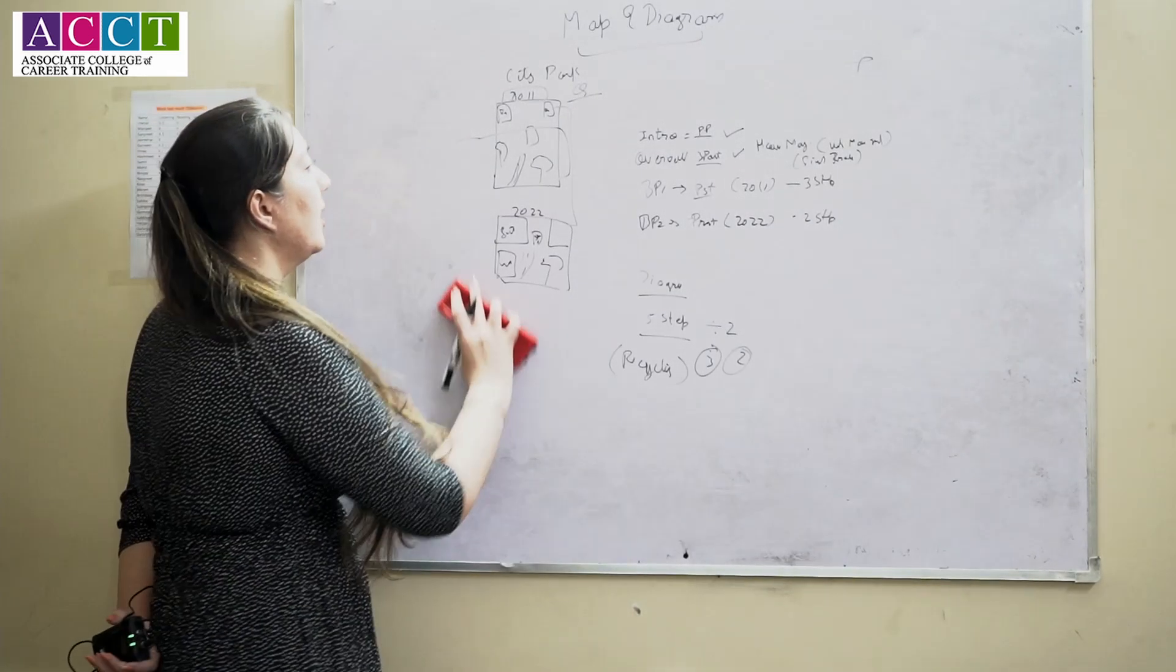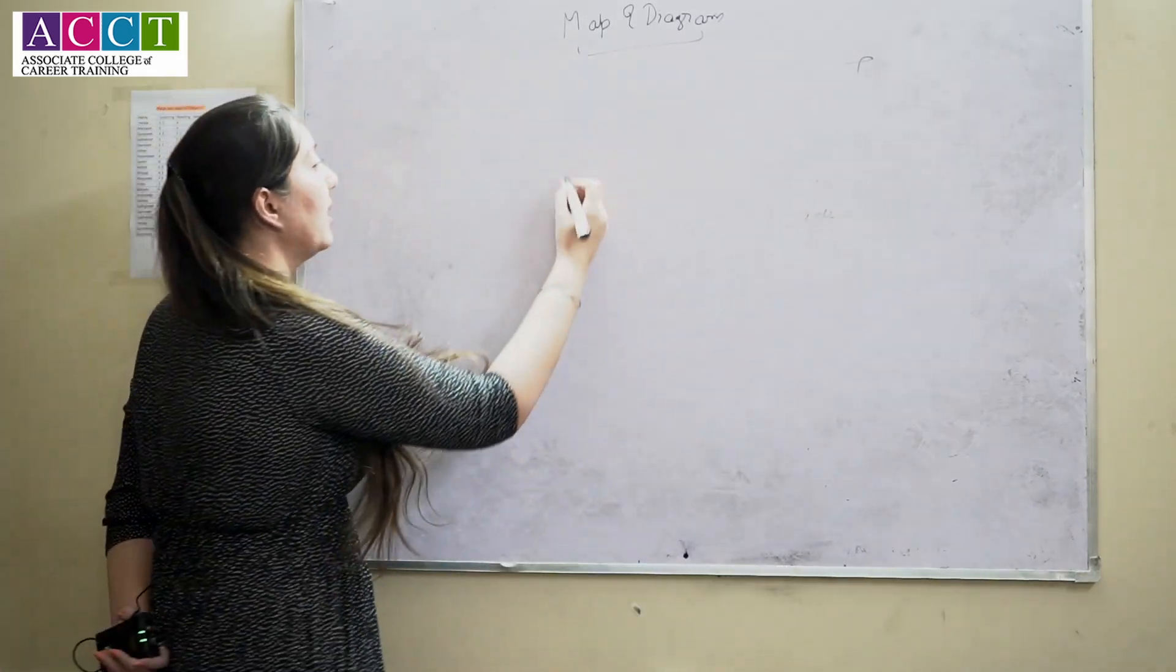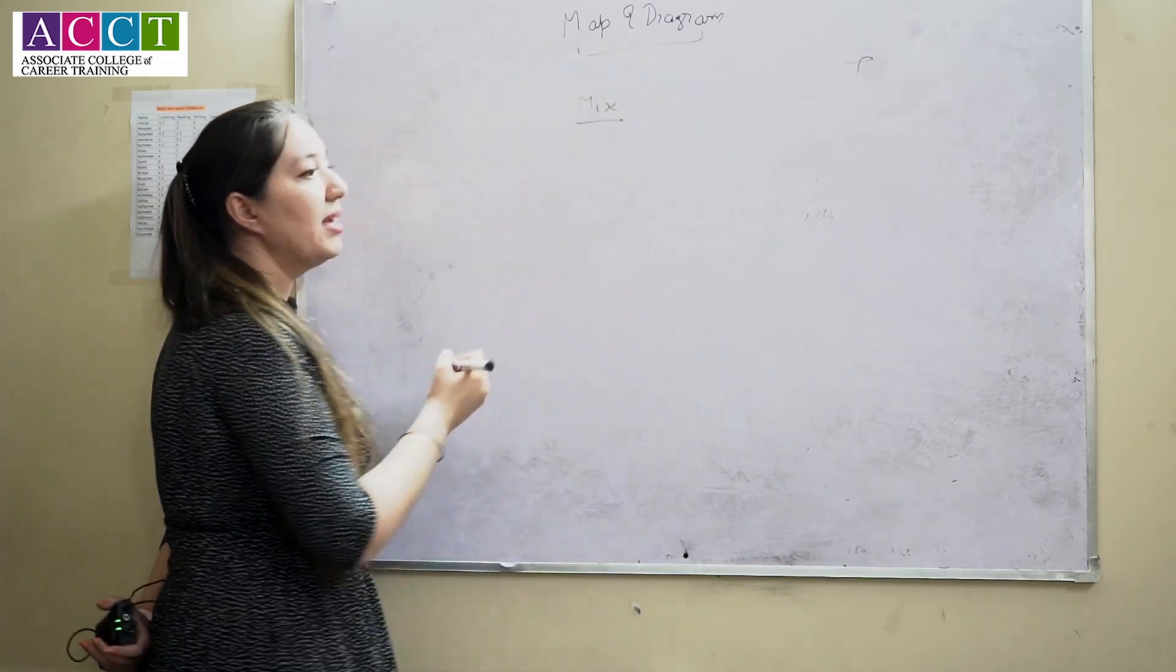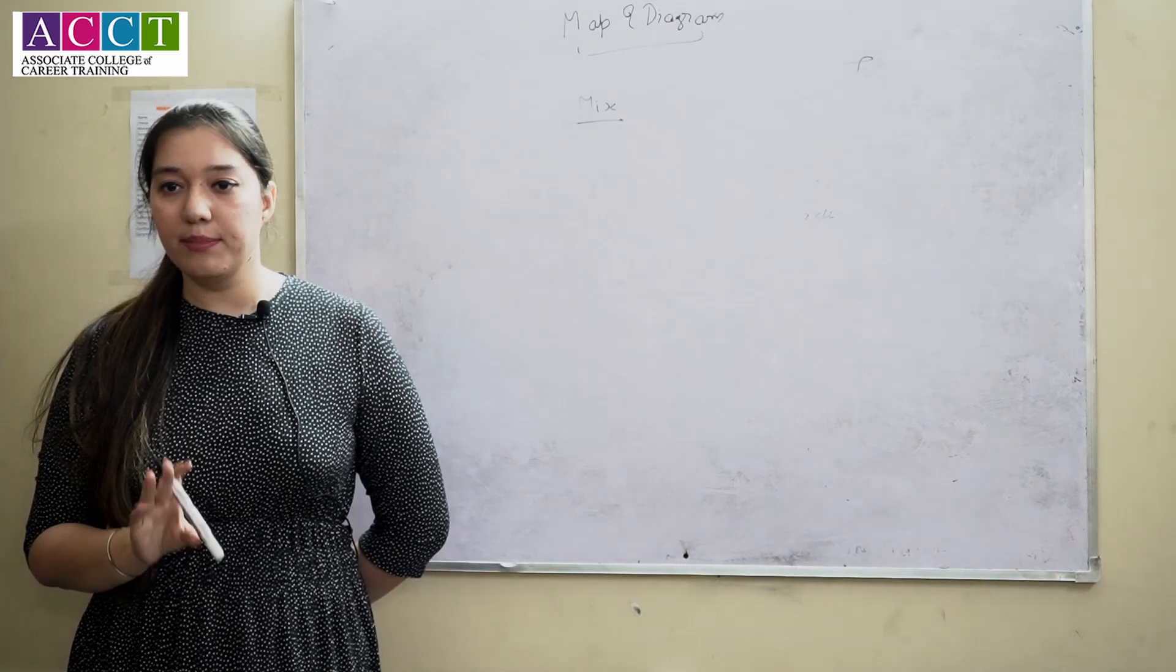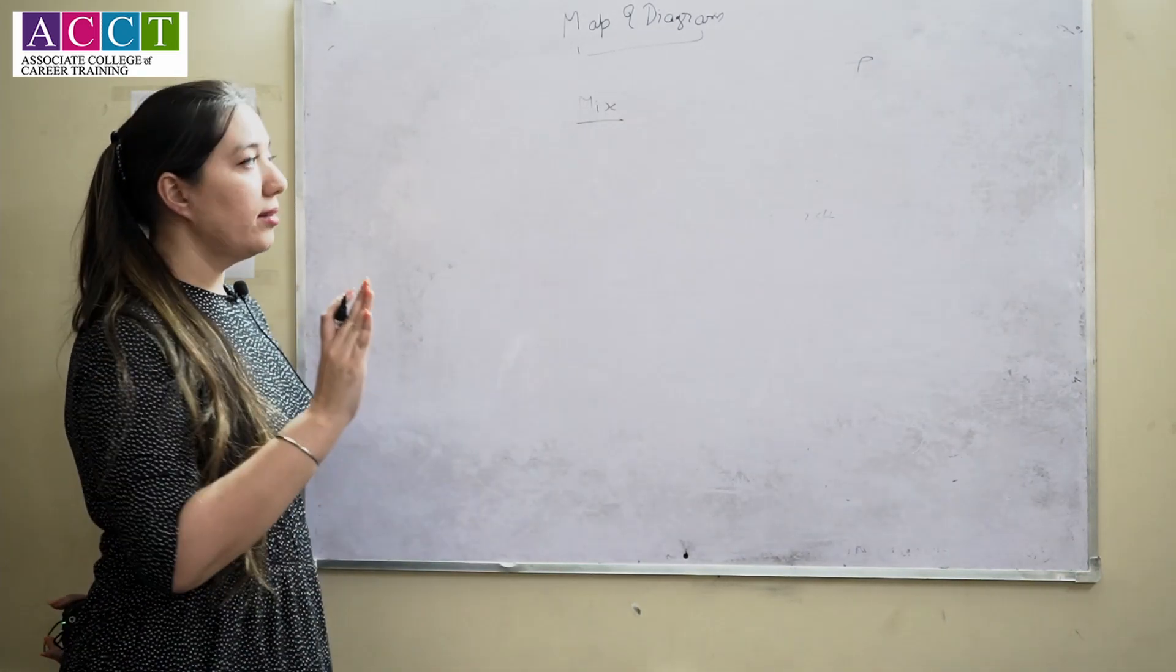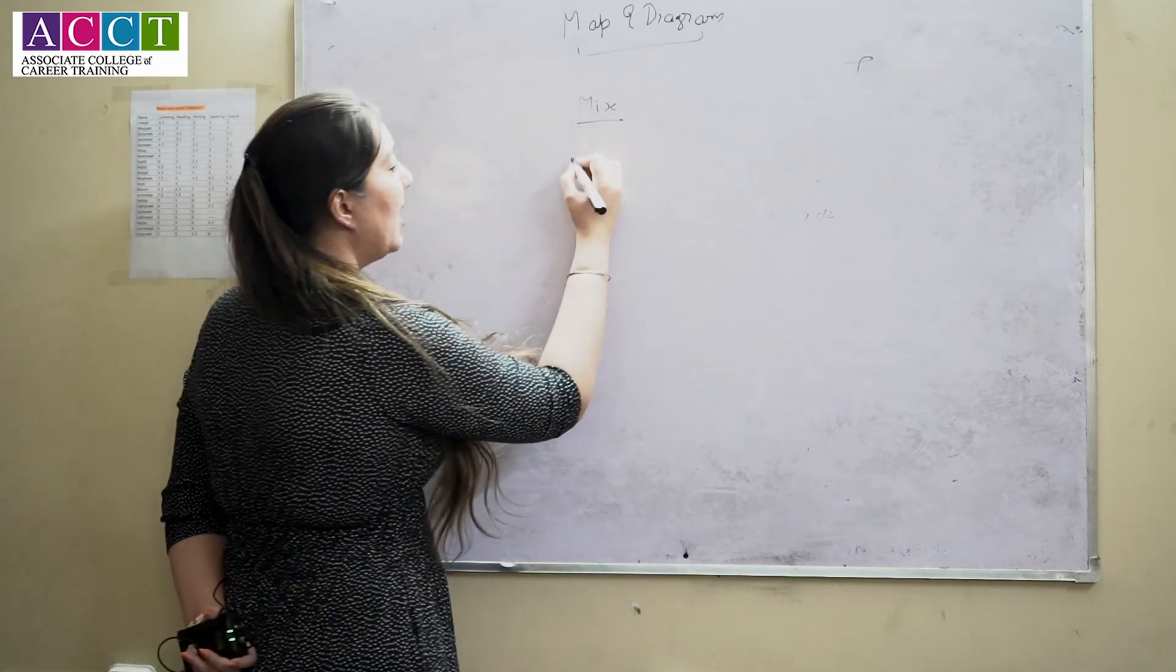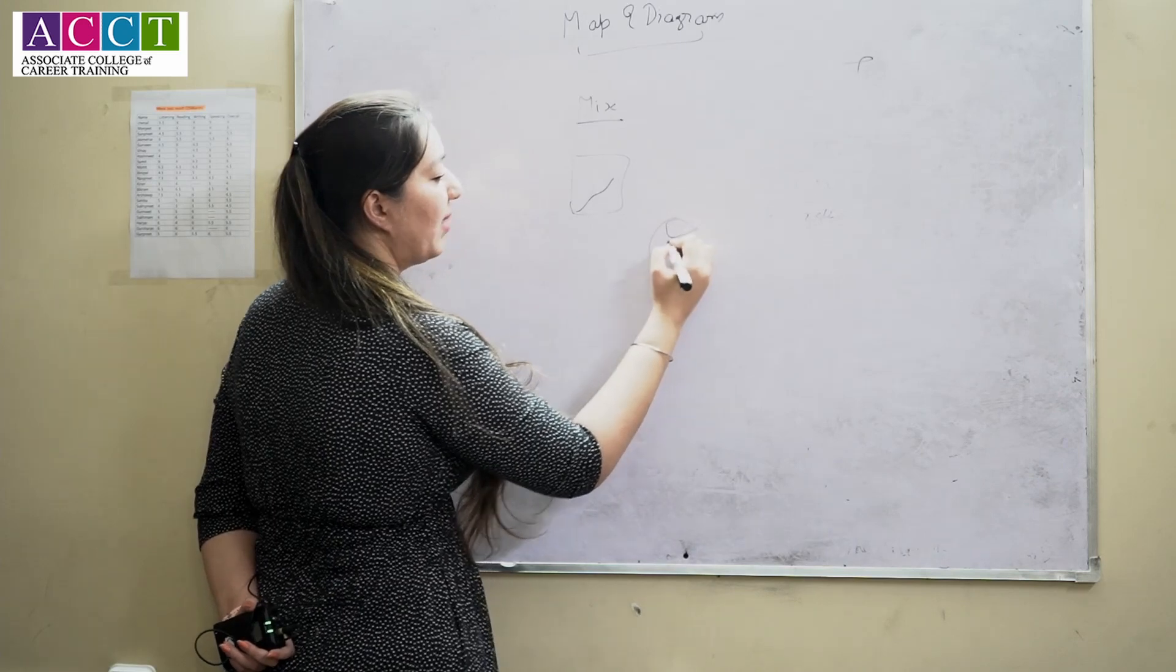Let's start with the last part, that is the mixture. Now the mixing of graphs - the mixing of graph will be, we all know that there are six types: bar, table, line, pie, map and diagram. So except map and diagram, any two types will come. For example, there is a line graph and there is a pie chart.